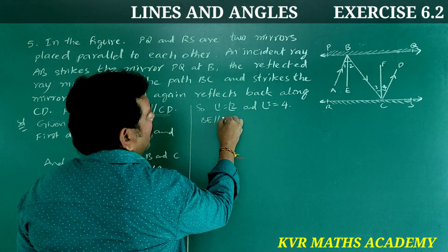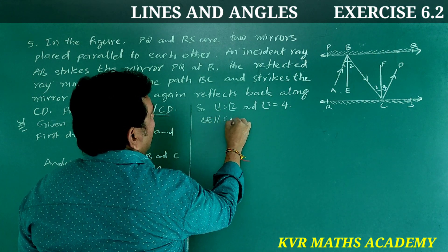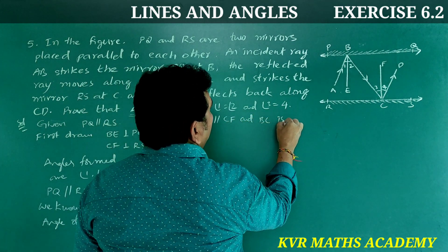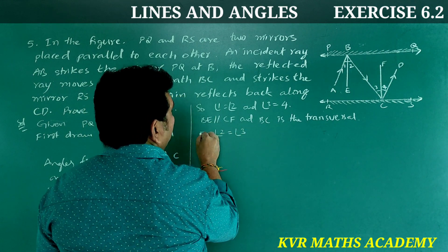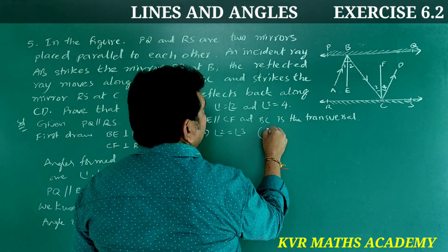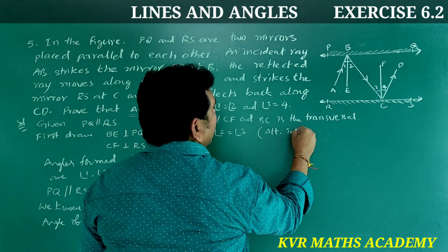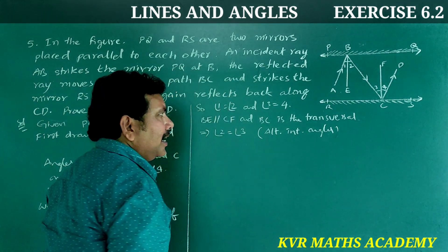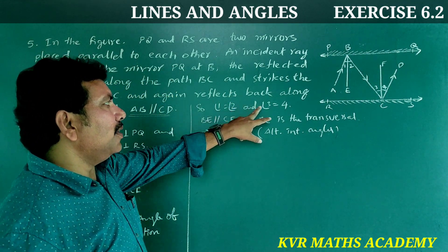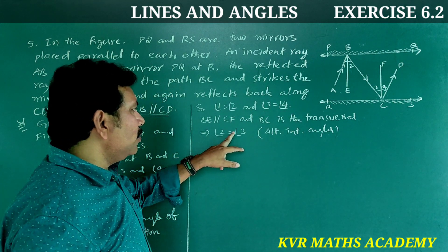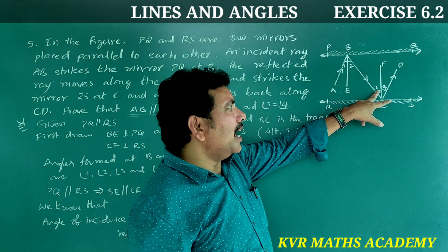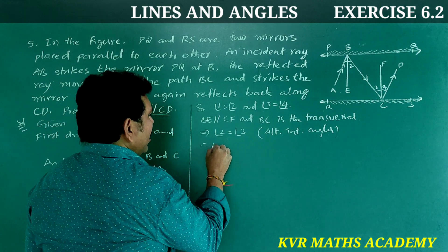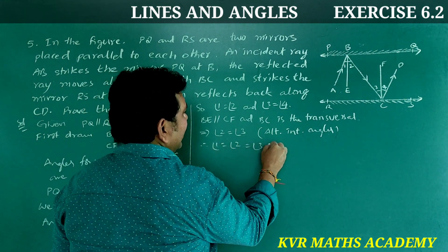BE is parallel to CF and BC is a transversal. Angle 2 is equal to angle 3 since they are alternate interior angles. Already we have angle 1 = angle 2 and angle 3 = angle 4, and now angle 2 = angle 3. Therefore angle 1 = angle 2 = angle 3 = angle 4.